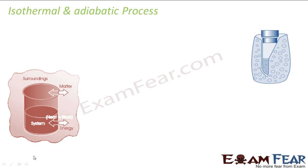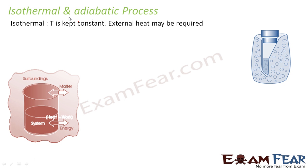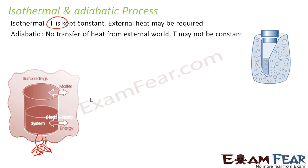A lot of students get confused between isothermal and adiabatic processes. In an isothermal process, temperature is kept constant, and external heat may be required — for example, if the gas is expanding, extra heat must be supplied to maintain temperature. In an adiabatic process, we have adiabatic walls and there is no transfer of heat from the external world. Temperature may change because of chemical reactions — either exothermic or endothermic.